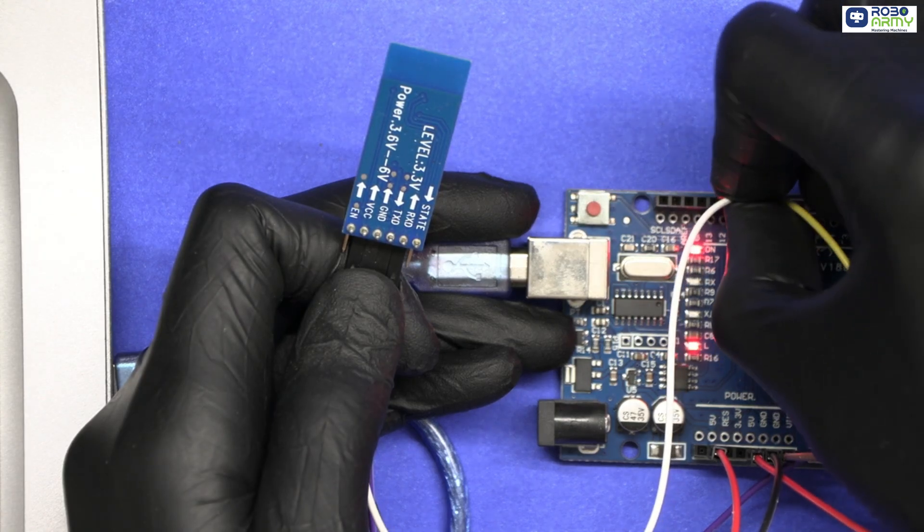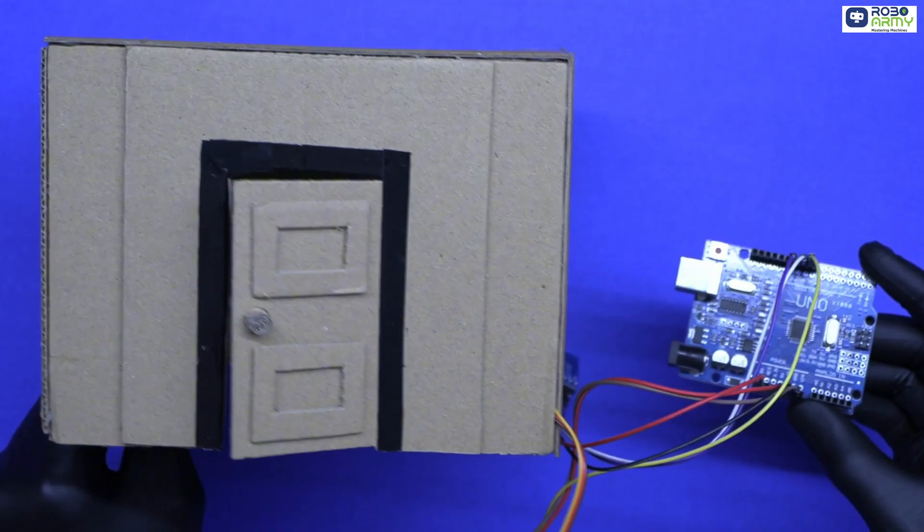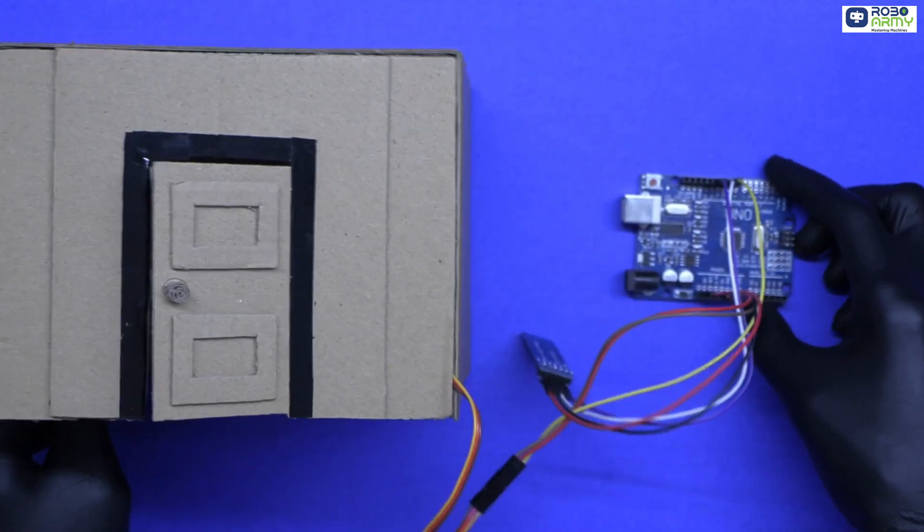Alright, now connect the TX and RX wires again to pins 10 and 11 as connected earlier. Install the servo in a cardboard door model or any structure you want.